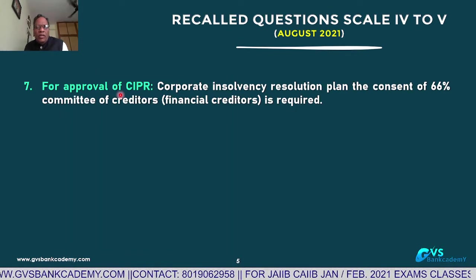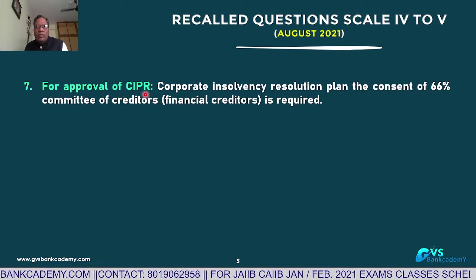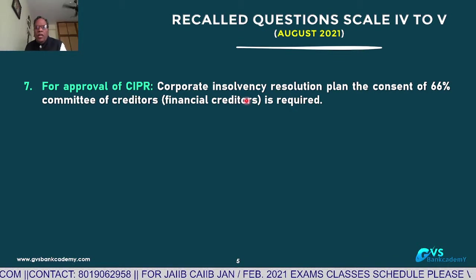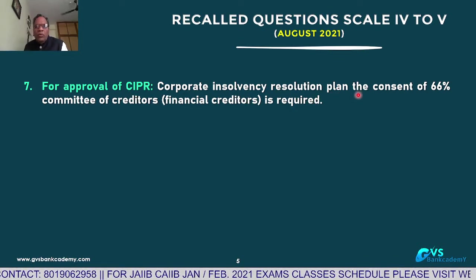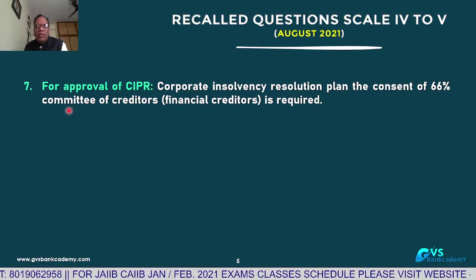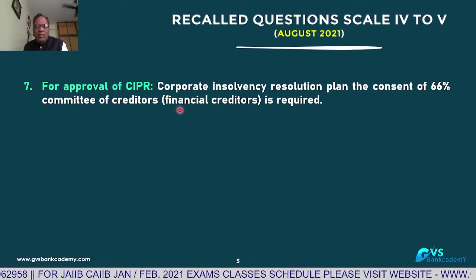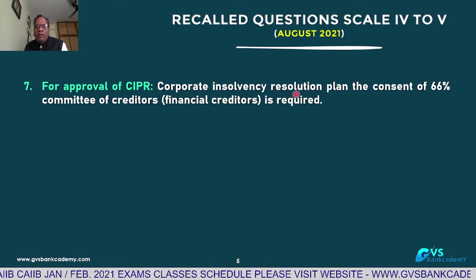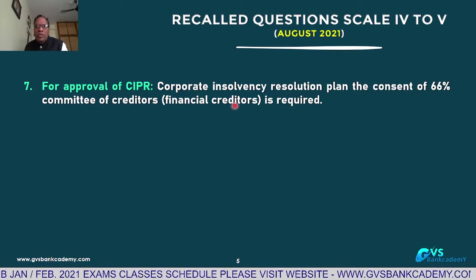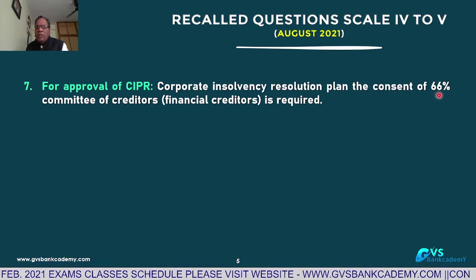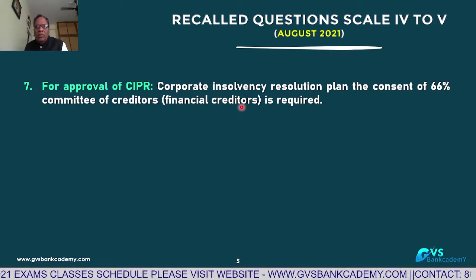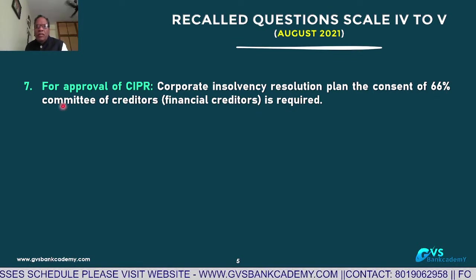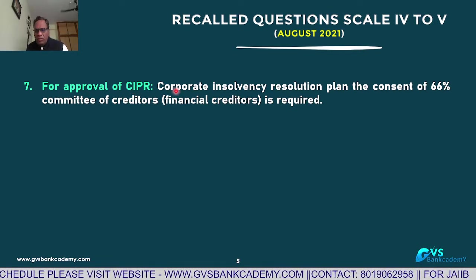Q7: For approval of CIRP — Corporate Insolvency Resolution Process under the Insolvency and Bankruptcy Code — the resolution plan shall be approved with the consent of 66% of the Committee of Creditors, meaning financial creditors or lenders. If 66% consent is not available, the unit will go to liquidation. Minimum consent required is 66% for approval of CIRP under the Insolvency and Bankruptcy Court.